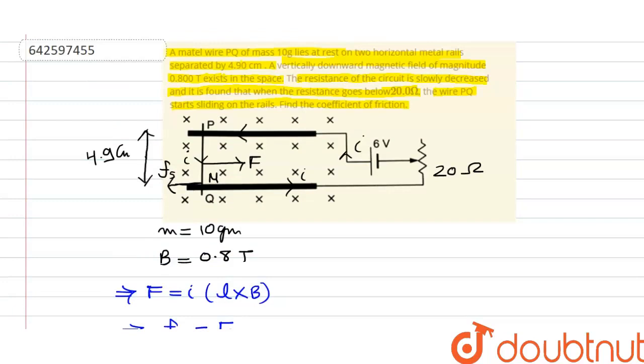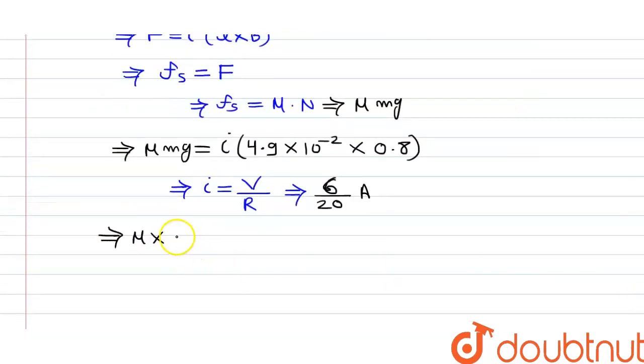It is 10 gram. So we can write it in terms of kilogram. So how we will write? 10 gram multiplied by 10 raised to minus 3.